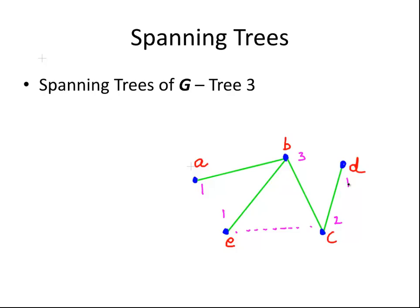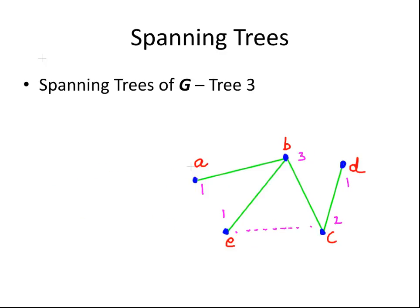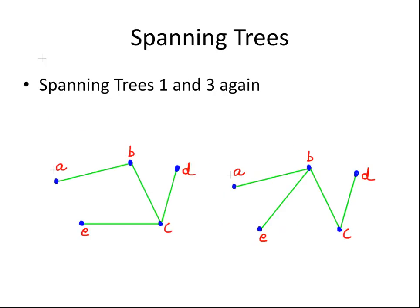What we have to do now is consider whether any of those trees are isomorphic. Notice the degree sequences of tree one and tree three are both the same: 3, 2, 1, 1, 1. So we are going to check if tree one and tree three are isomorphic. We have them together here — tree one on this side and tree three on the other.